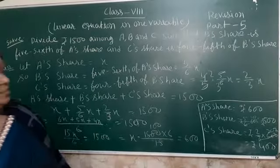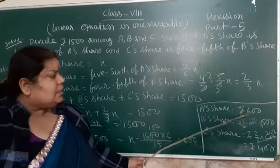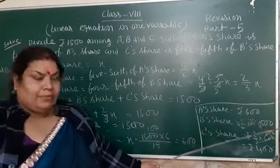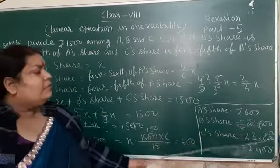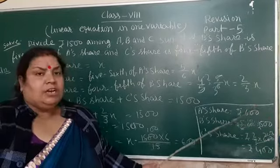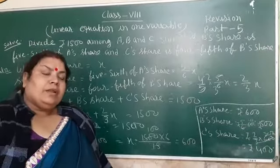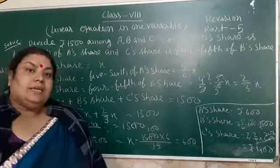And, see, very interesting thing. A's share is 600, B's share is 500, and C's share is 400. When you add all the shares, we got 1500. That means, our answer is right.